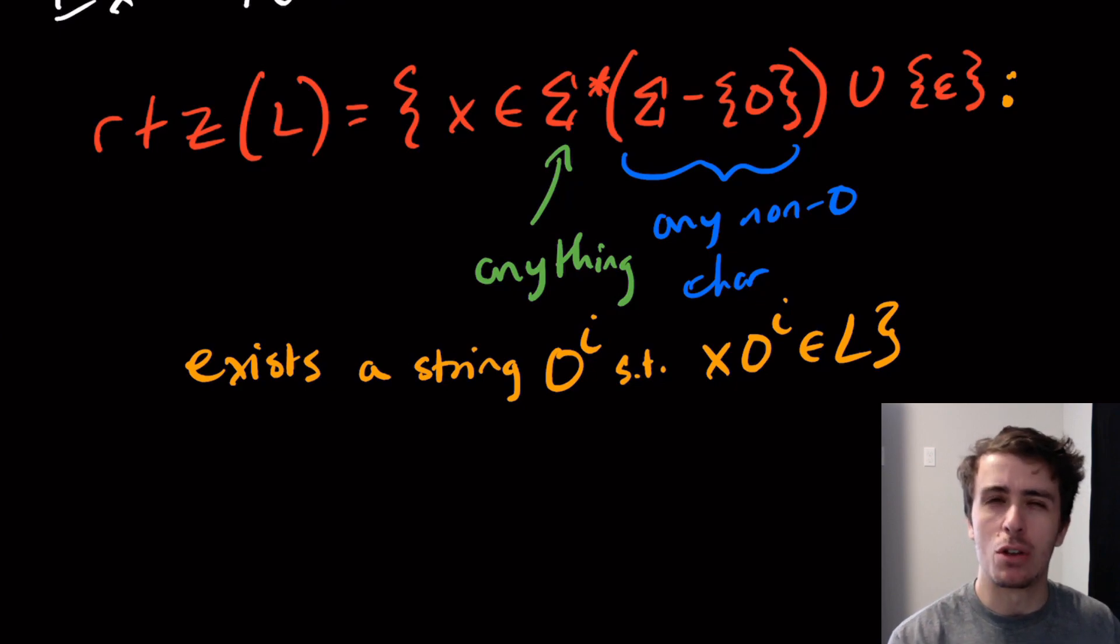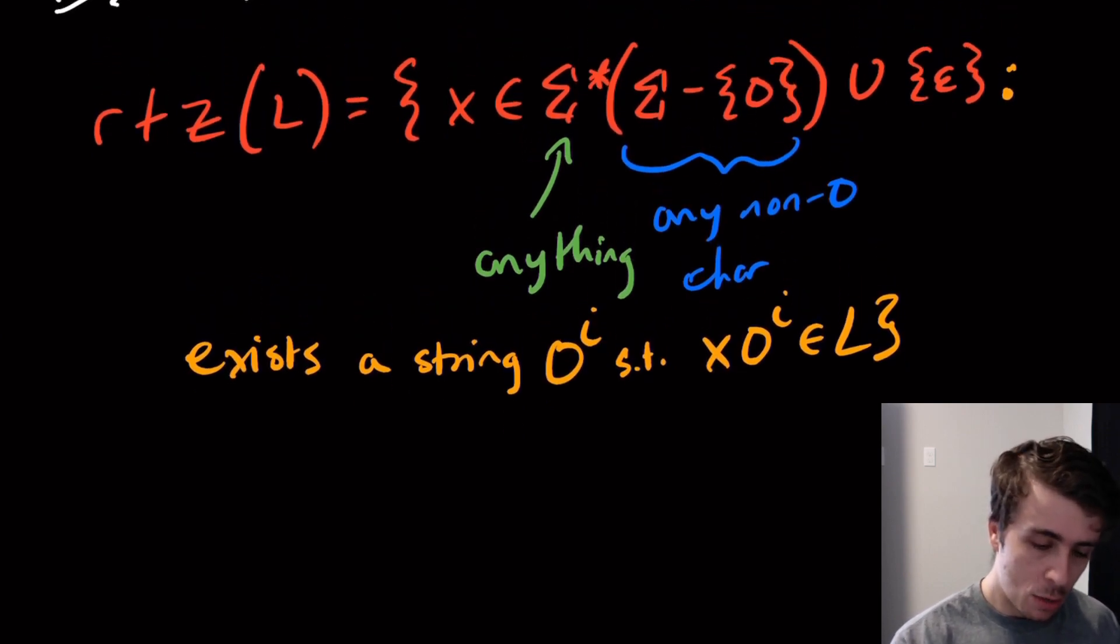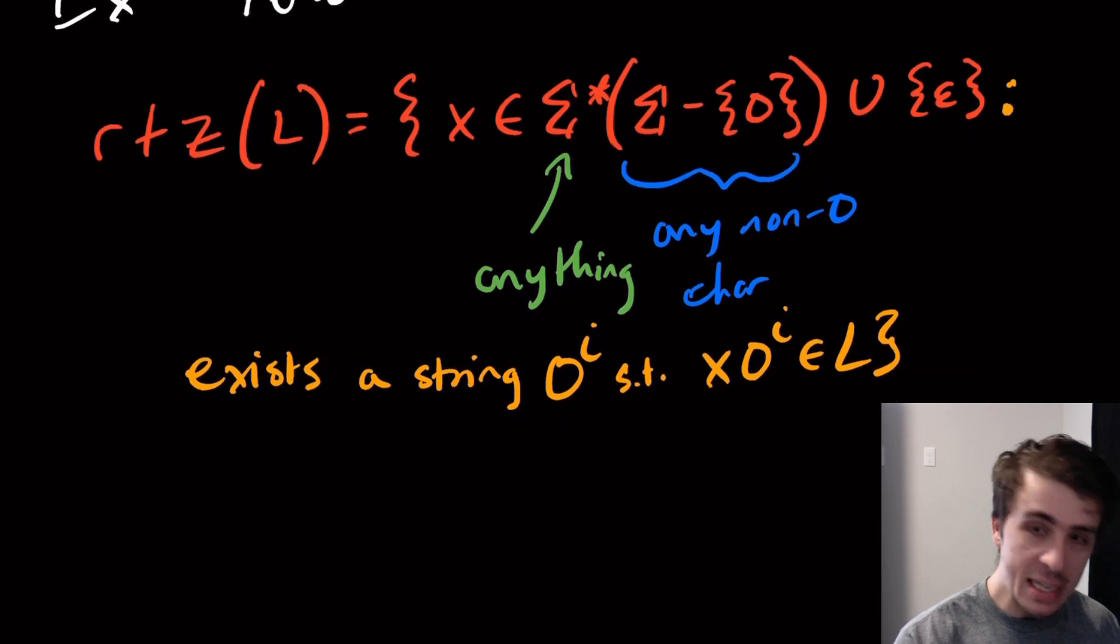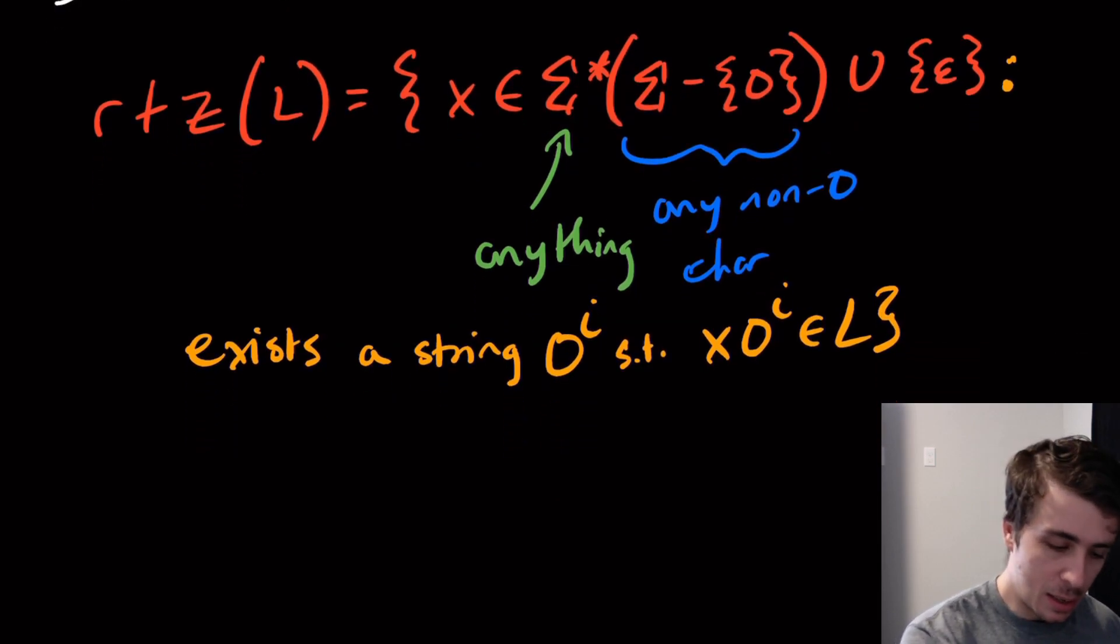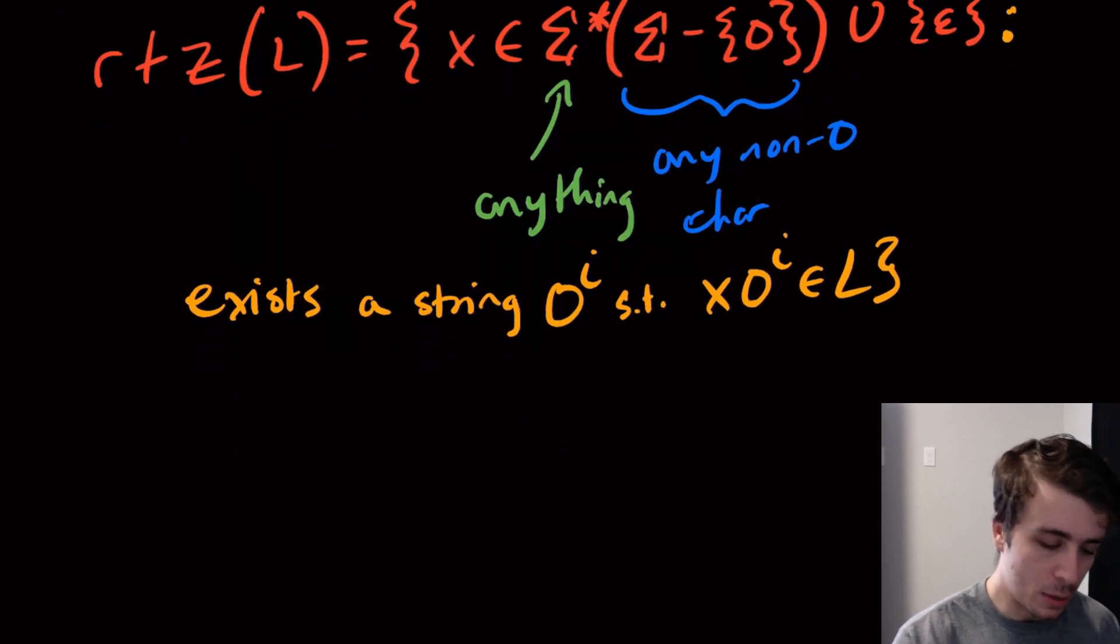You could say well I'm going to remove one zero and keep all the other zeros at the end. The key here is that we're enforcing that the strings x only have a non-zero character at the end or they're the empty string. We can actually see that this is closed for regular languages.